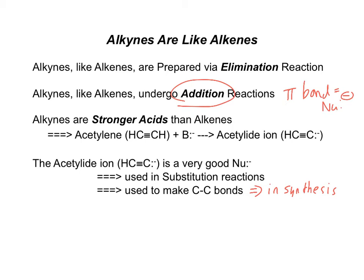We also know that elimination reactions are used to make pi bonds, so alkenes and alkynes are made via elimination reactions.